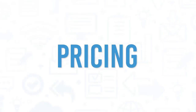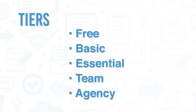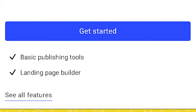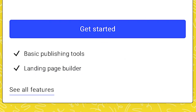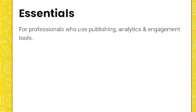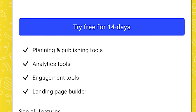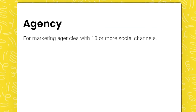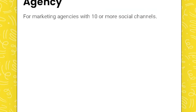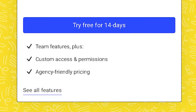Buffer has five tiers — free, basic, essential, team, and agency — that you can pay for either monthly or annually with a discount. Starting with basic publishing tools and a landing page builder, each tier builds on the last, with pricing based on the number of social channels, team members, and clients. All tiers beyond the free tier offer users a 14-day free trial.